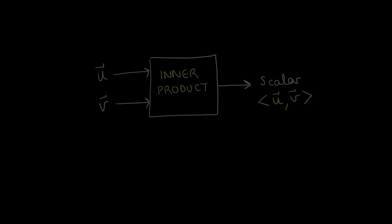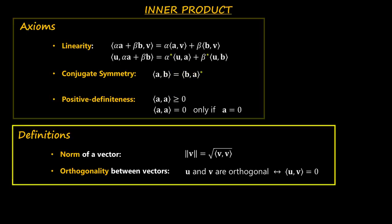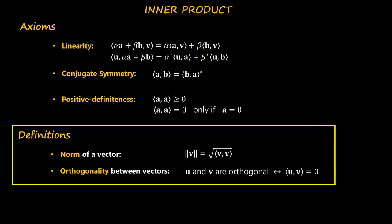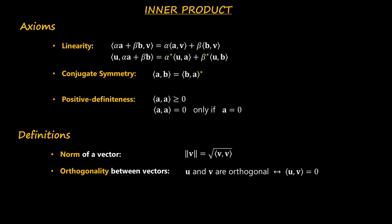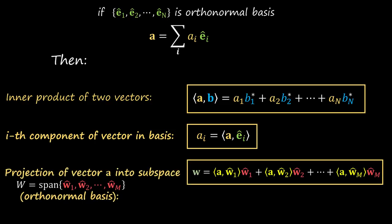So with this we reach the end of the video. Let's summarize what we learned. The inner product is an operation which can be defined in a vector space. It must follow certain simple axioms, and it defines the meaning of length of a vector and the meaning of orthogonality between vectors. When working with an orthonormal basis, the inner product gives us a very easy recipe to find the component of a vector in a certain basis vector, and also to find the projection of a vector into a subspace defined as the span of an orthonormal basis.